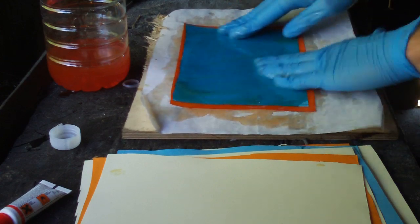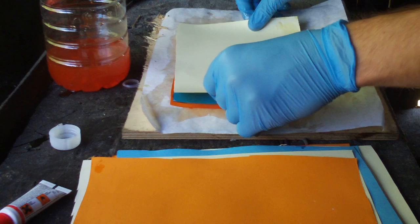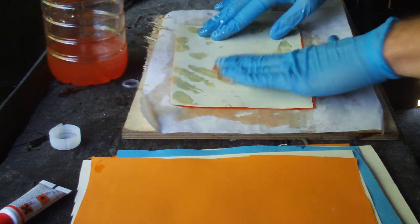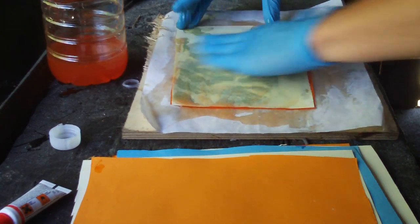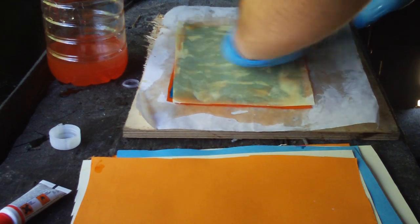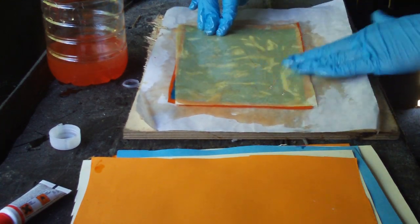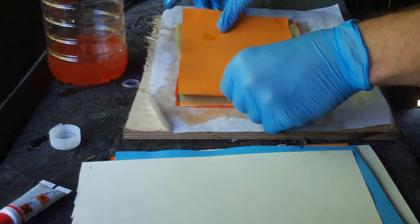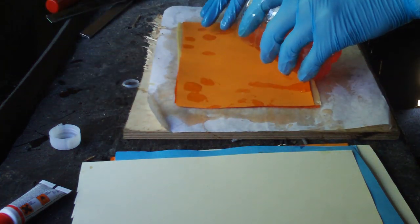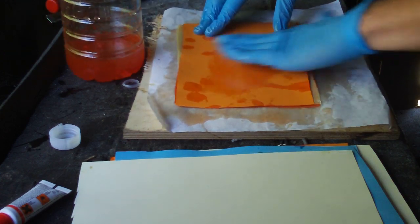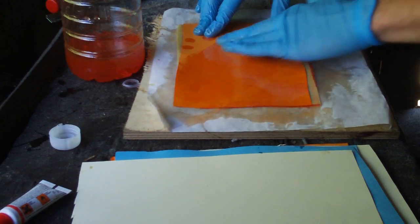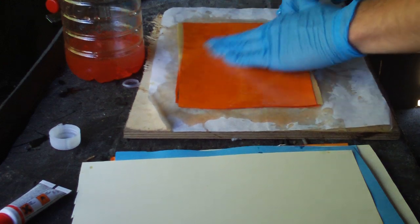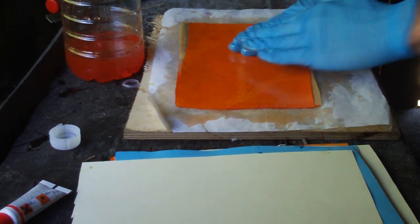Then you just continue the process. Just pour the resin. This is pretty much fun work but it's dirty. Just be careful how much you put on because you don't want to run out. Every single piece needs to get resin. You're going to see parts that weren't poured with resin and that's going to show in your final material.